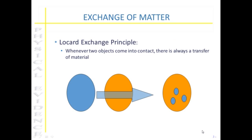A lot of trace evidence type materials are going to be brought about as physical evidence because of the exchange of matter. The Locard exchange principle discusses the fact that whenever two objects come into contact there's always a transfer of material. This might in some instances be a very slight transfer, or in some instances a lot of matter transferred, depending on the amount of contact that occurs.